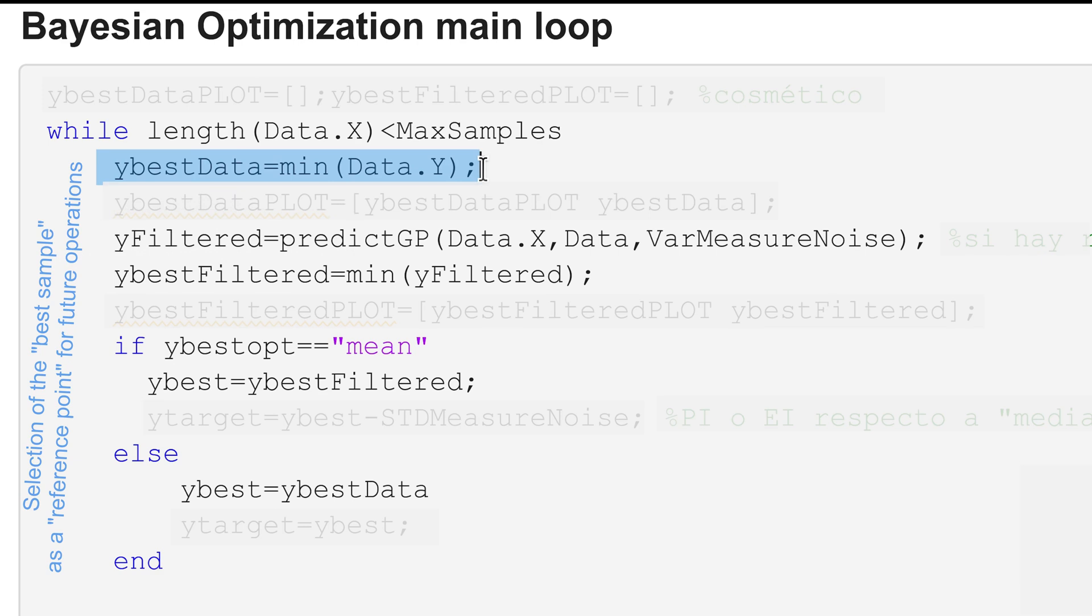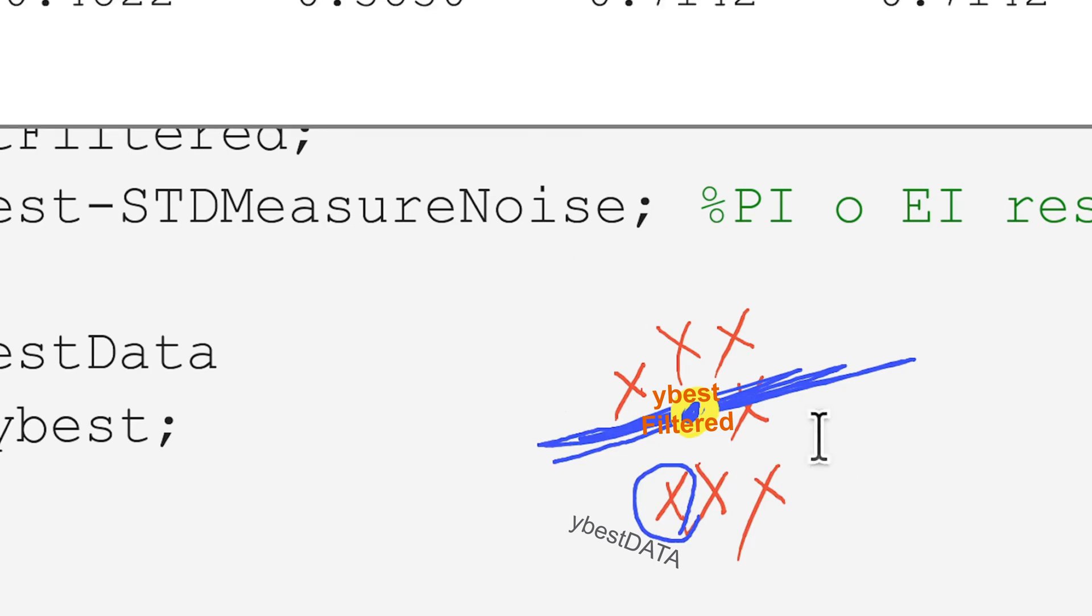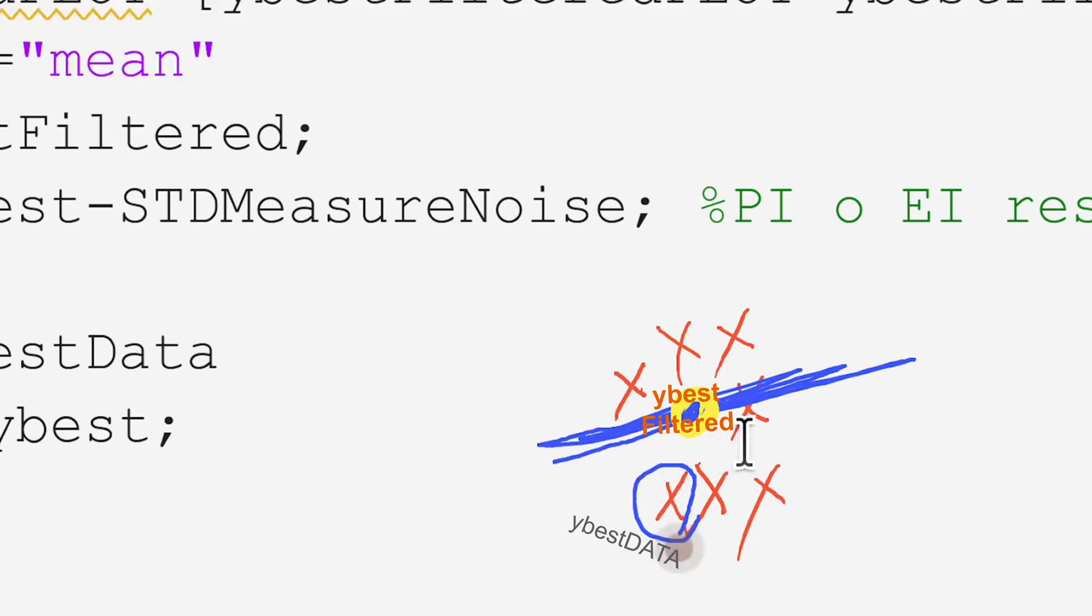However if we have a lot of measurement noise, maybe my intuition tells me that the Gaussian process is somehow the true clean measurement. So even if this one could be classified as my best sample, the minimum of my measurements, if I think I have a lot of measurement noise then maybe I would decide to use the so-called filtered measurement.